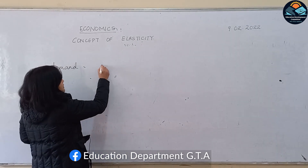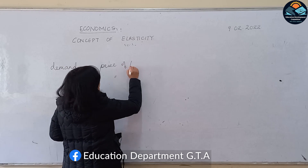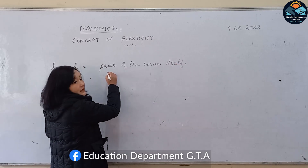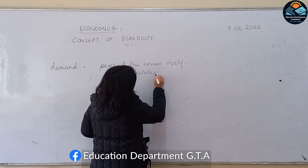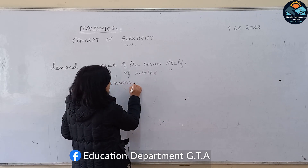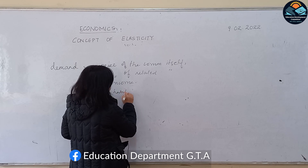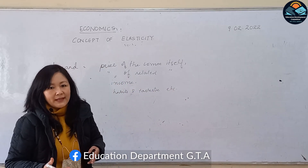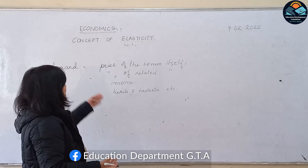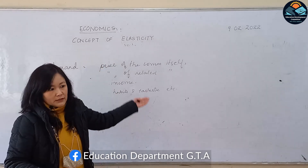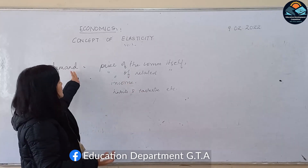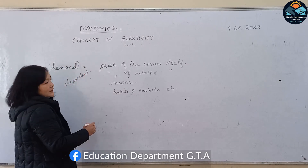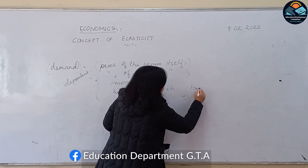Just to name a few: it was the price of the commodity itself, then the price of related commodities, then income, and then habits and tastes. In the second chapter, demand depends upon certain factors — these are the determinants of demand. Therefore demand becomes a dependent variable, since it depends on these factors, and all these other factors are independent variables.